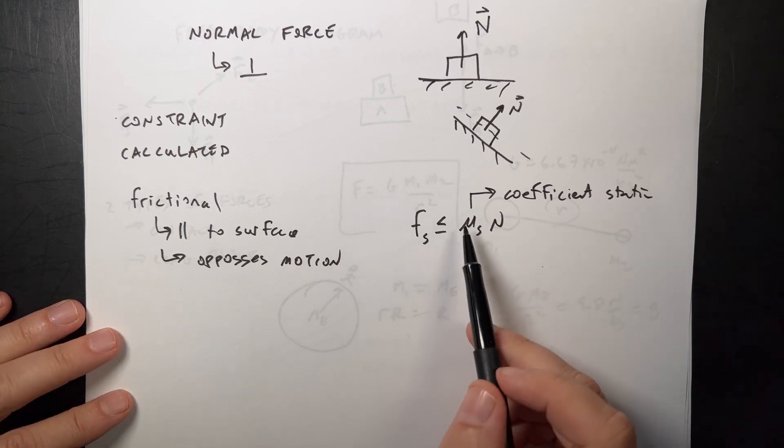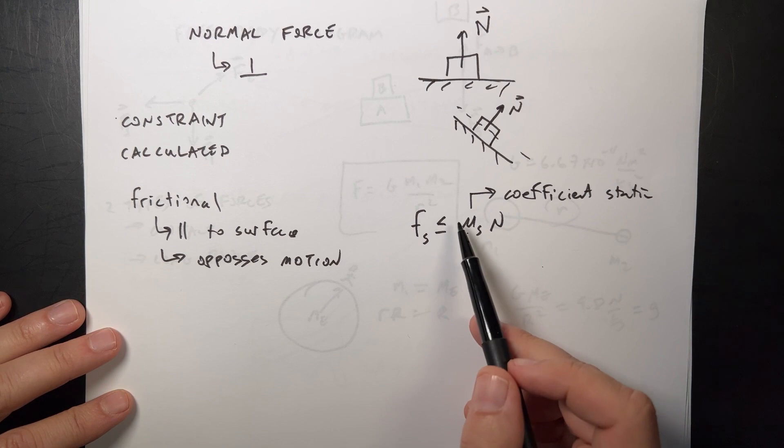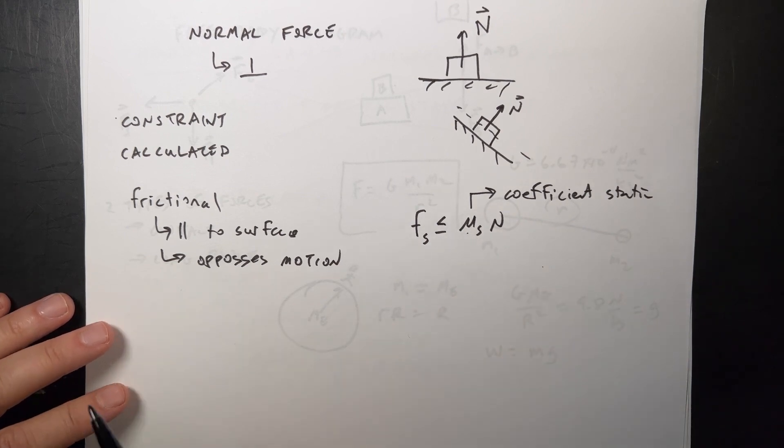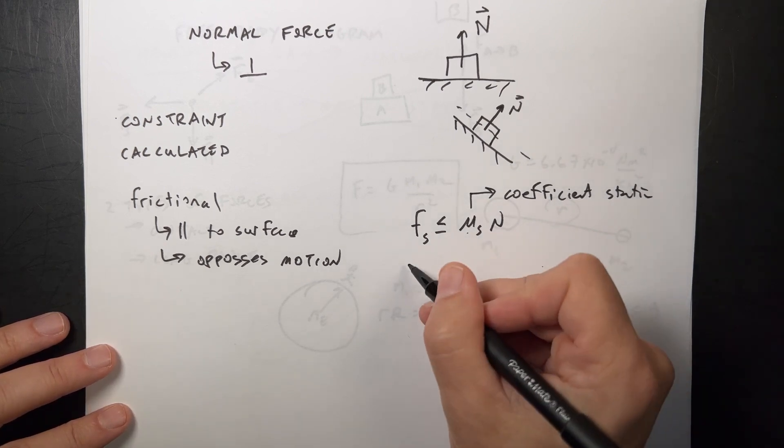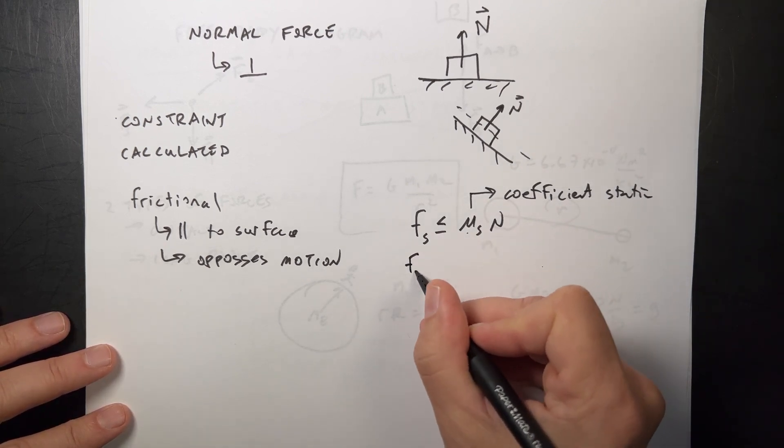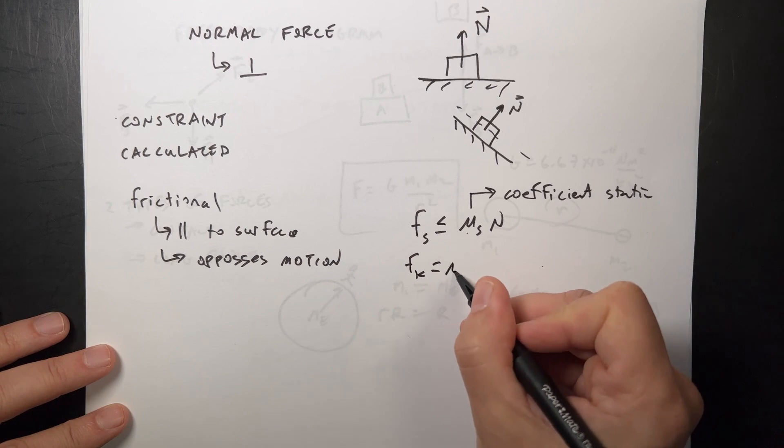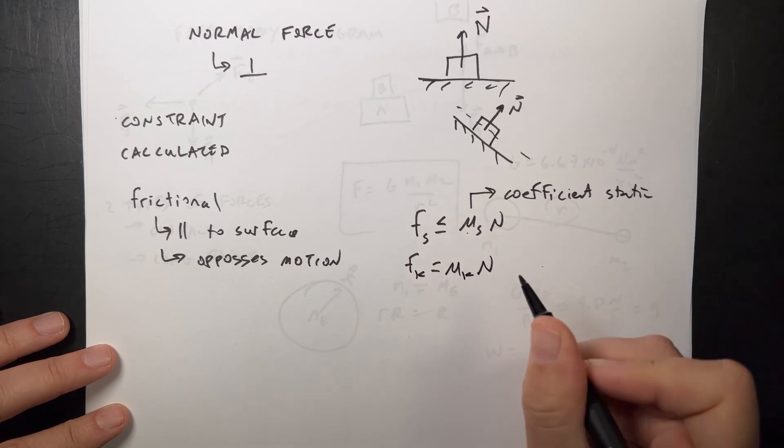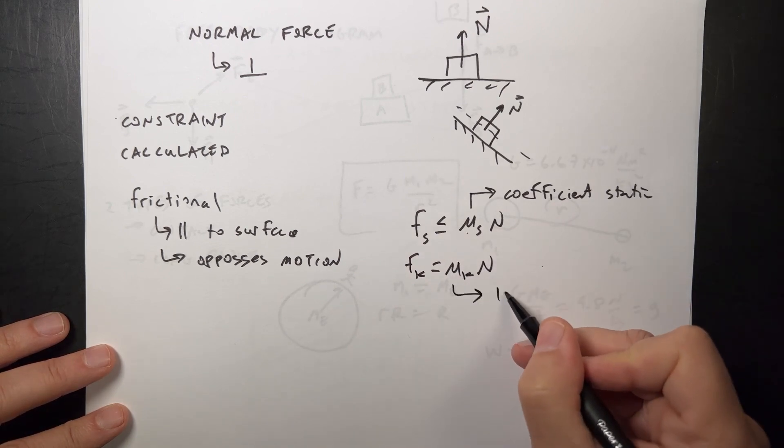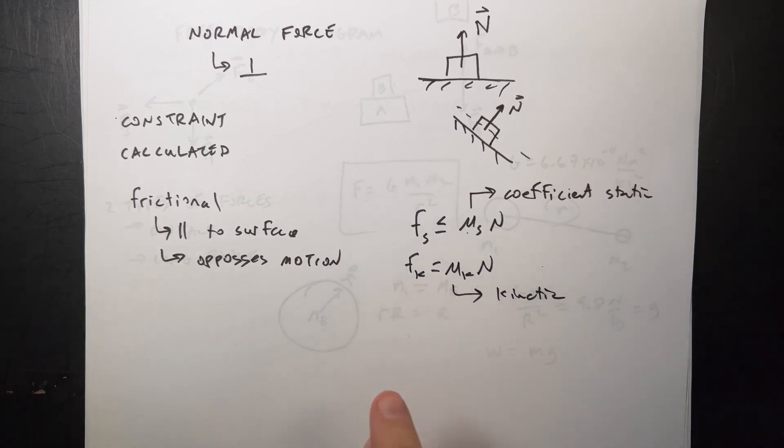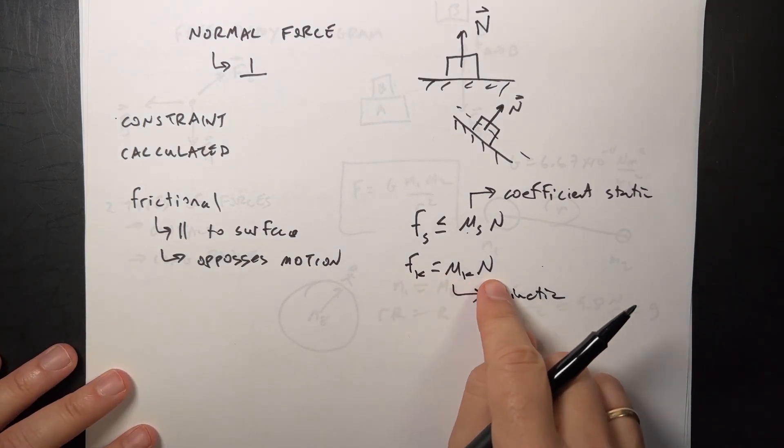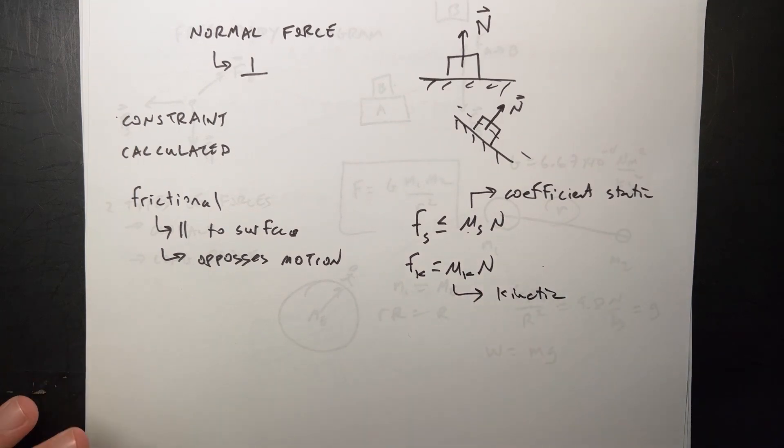N is the normal force. If you push these two surfaces harder together, it increases the friction force. This less than or equal to - if I push on a block and it doesn't move, I can't have a greater frictional force pushing back or it would move backwards. So this is the maximum value. Once you exceed that, you get into kinetic friction, and it's equal to μk times N. This is kinetic - just a different coefficient, and it's equal to. That's when the two materials are sliding relative to each other.